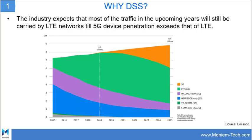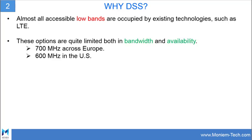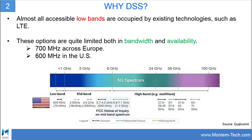The second reason is that almost all accessible low bands are occupied by existing technology such as LTE. There are still few options on the table — for example, 700 MHz across Europe or 600 MHz in the US — but such options are limited both in bandwidth and availability. This raises the question of refarming the spectrum from LTE to 5G.